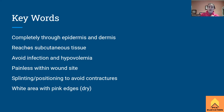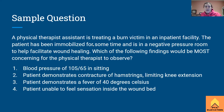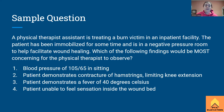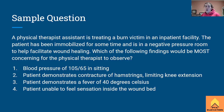Sample question: A physical therapist assistant is treating a burn victim in an inpatient facility. The patient has been immobilized for some time and is in a negative pressure room to facilitate wound healing. Which of the following findings would be most concerning? One: blood pressure of 105/65 in sitting. Two: patient demonstrates hamstring contracture limiting knee extension. Three: patient demonstrates a fever of 40 degrees Celsius. Four: patient is unable to feel sensation inside the wound bed.